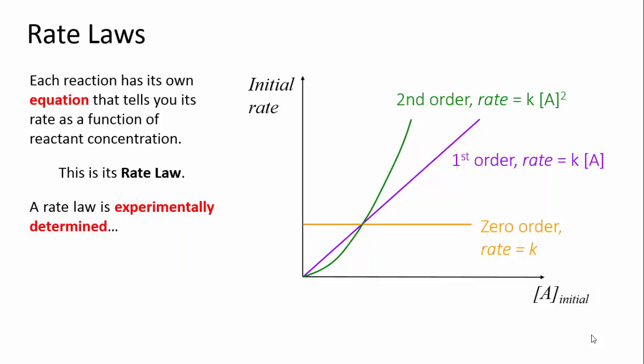By varying the concentration, we can distinguish between different dependencies on concentration. The rate might be directly proportional to the concentration, or it could be proportional to the square of the concentration, or it might not depend on it at all. And we can turn that proportionality into a proper equation by determining the constant k, which is called the rate constant.